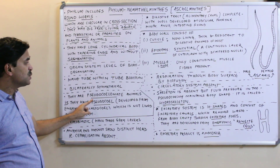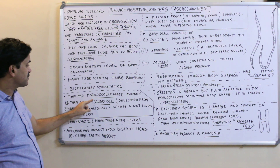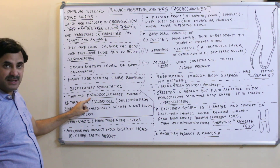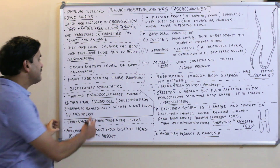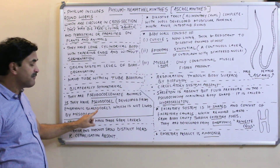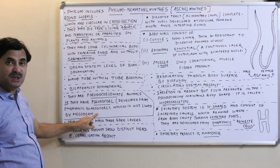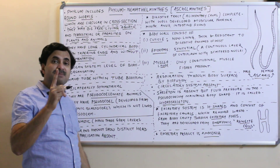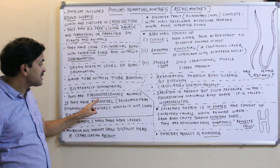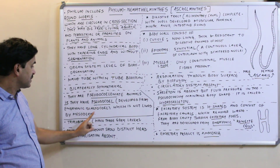They are pseudocoelomate animals. Unlike Platyhelminthes, which are acoelomate, nematodes have a pseudocoelom derived from the embryonic blastocoel. A pseudocoelom is a false coelom — it is not lined by mesoderm, whereas a true coelom is always lined by mesoderm.